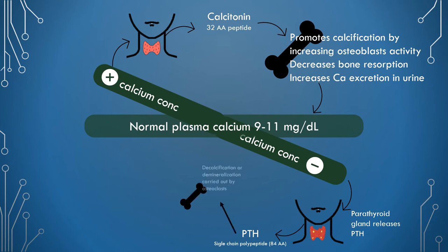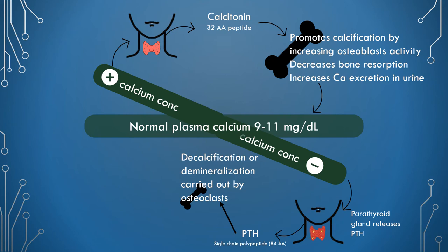Parathyroid hormone causes decalcification or demineralization of bone, carried out by osteoclasts. It also stimulates pyrophosphatase and collagenase, resulting in bone resorption — but only when there is no dietary calcium being administered. Additionally, parathyroid hormone increases calcium reabsorption by the kidney tubules, which is the most rapid action to elevate blood calcium levels.